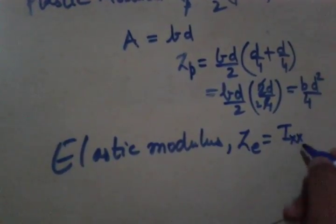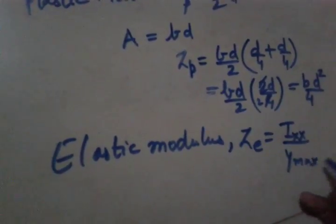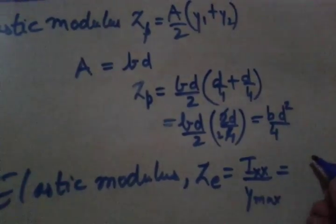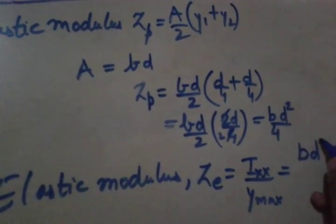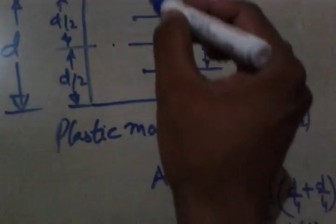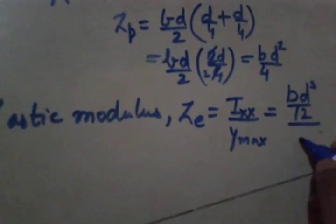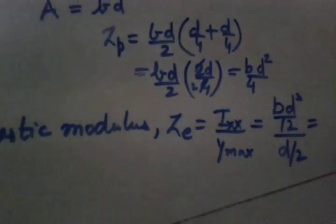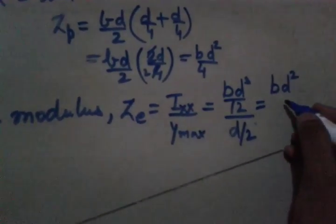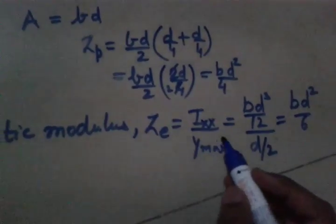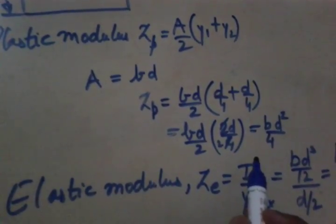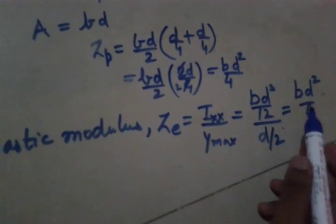Ze is equal to Ixx divided by ymax, and this is a rectangular section therefore Ixx will be BD cube divided by 12, and ymax as we can see over here is equal to D by 2. So this is D by 2, so when we simplify this we are left with BD square divided by 6.